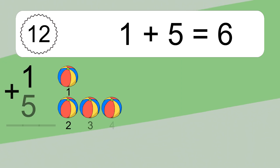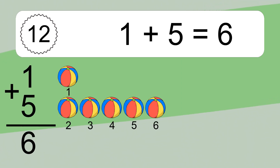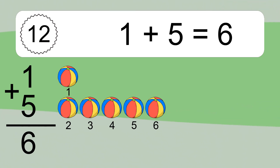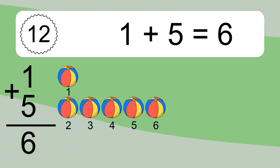1 plus 5 equals 6. Let's count it. 1, 2, 3, 4, 5, 6.